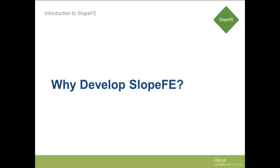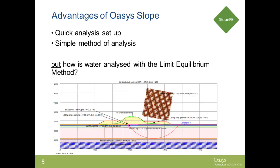So we'll start off with why develop SlopeFE. We have OASIS slope and it's heavily used and quite successful, so why a new slope stability analysis program? Well, OASIS slope has its advantages. It's quick to set up and the limit equilibrium method of analysis is very simple. It's easy to grasp and it ties in with lots of codes around the world.